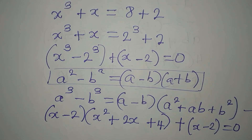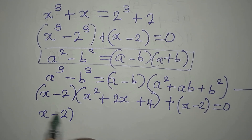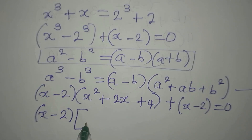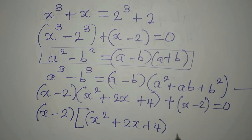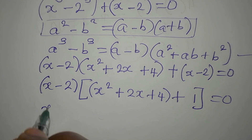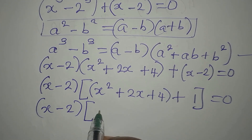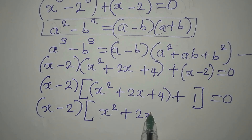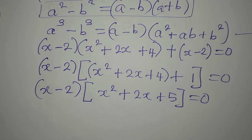Then we add plus (X minus 2) equals 0. X minus 2 appears in both terms, so it is a common factor. Factoring it out, we divide through and get X minus 2 times (X squared plus 2X plus 4 plus 1), giving us X minus 2 times (X squared plus 2X plus 5) equals 0.